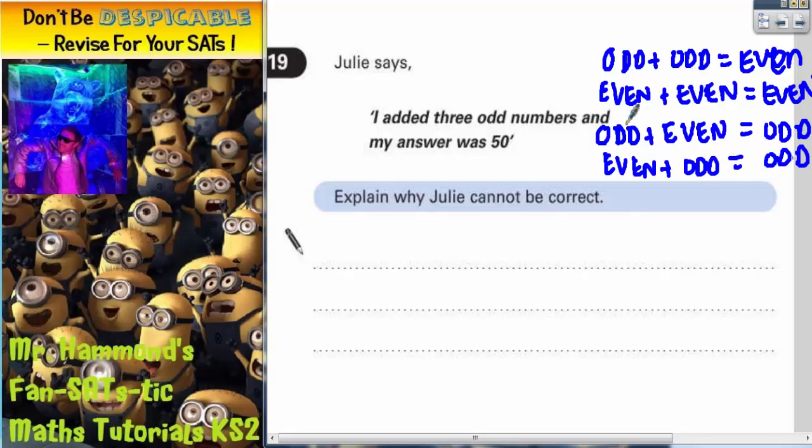Now let's examine what happens with Julie's problem. She added three odd numbers together, so the first two odd numbers that she adds, odd plus odd, will have given an even answer. So when she adds those first two, after adding the first two, she will have got an even answer.